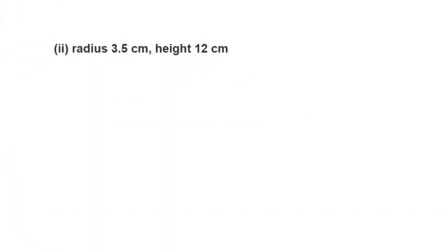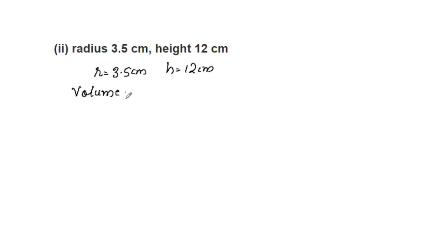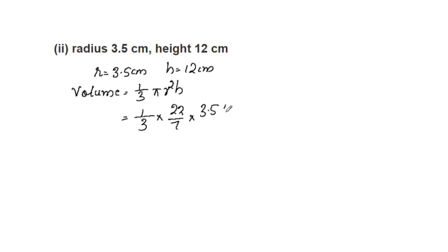Now for the second question, we substitute radius r = 3.5 cm and height h = 12 cm. The volume of the right circular cone is equal to 1/3 × π × r² × h, which is 1/3 × 22/7 × 3.5 × 3.5 × 12.